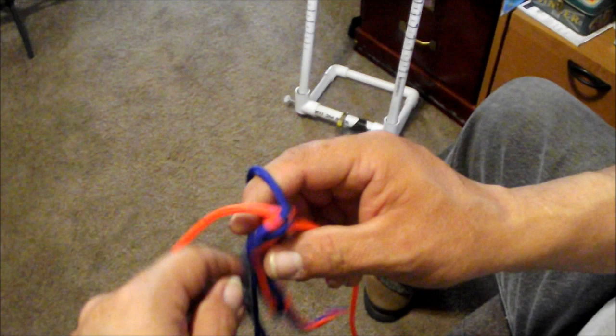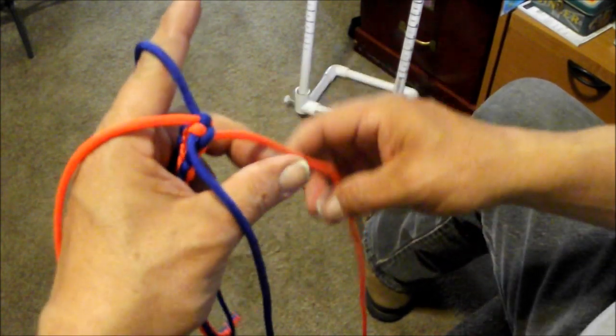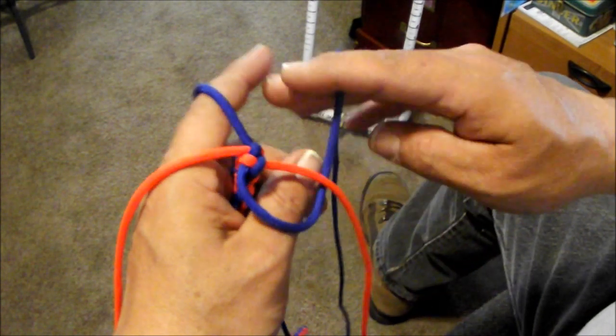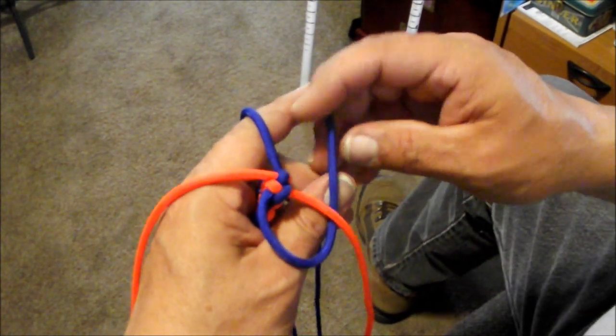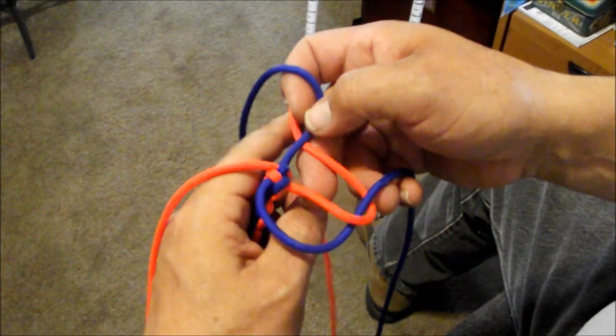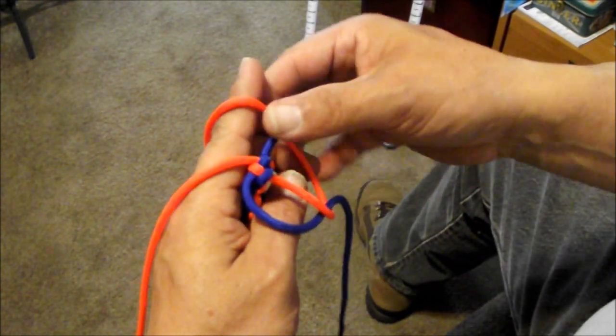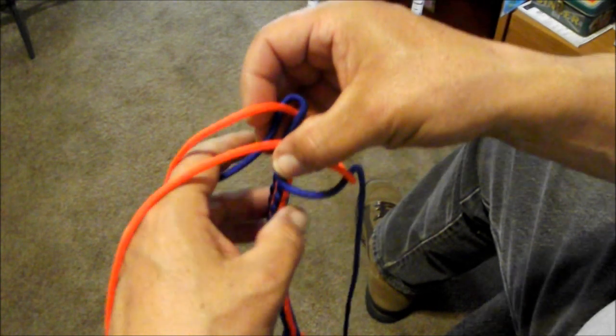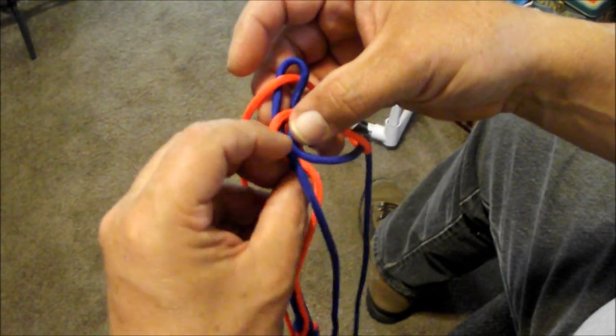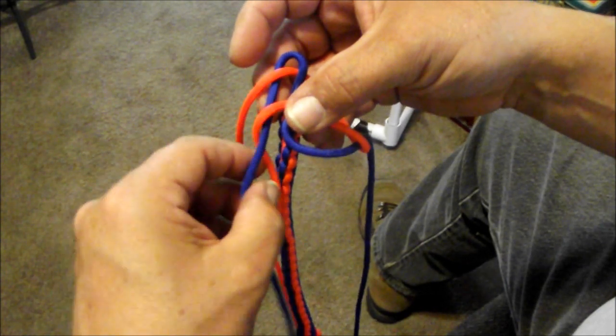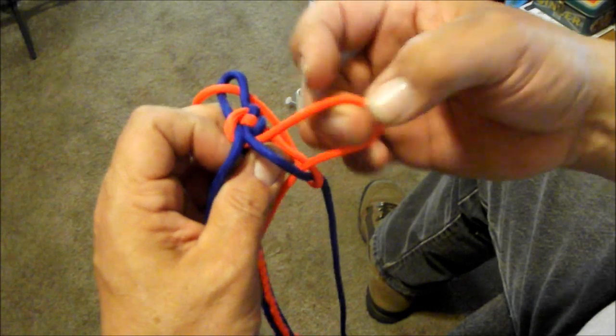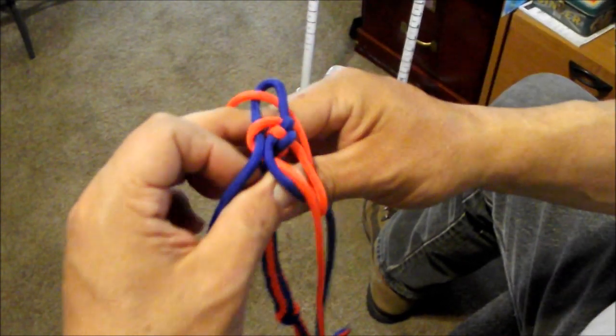And then once that's done, we'll commence with wall knot. Goes under, that one will go under north. North will go under both, go under the west. West will come up and under, and then you'll see that first loop or bite that you made.